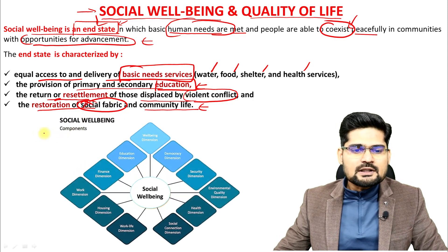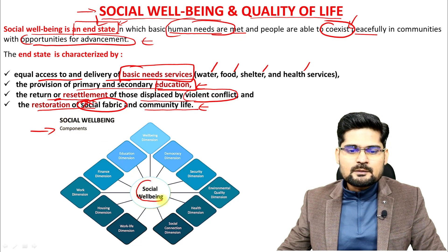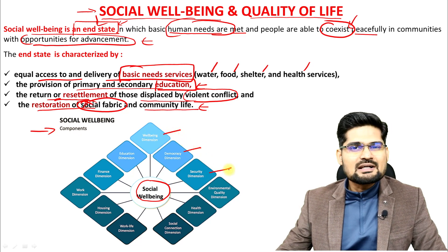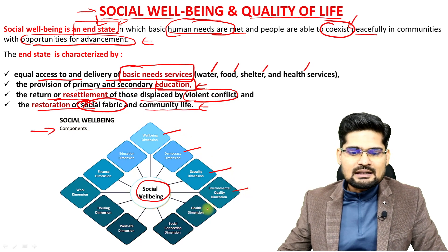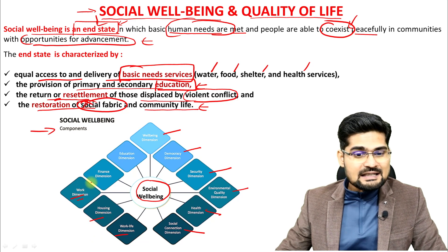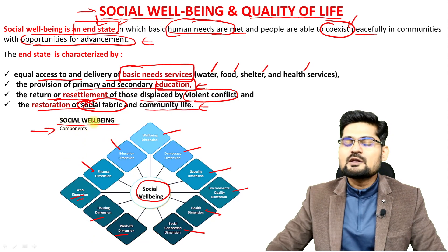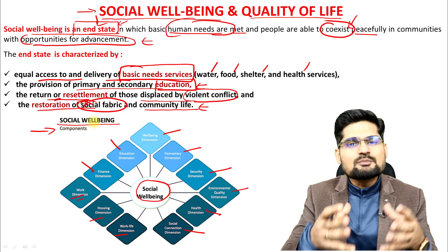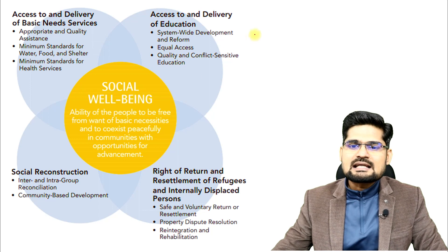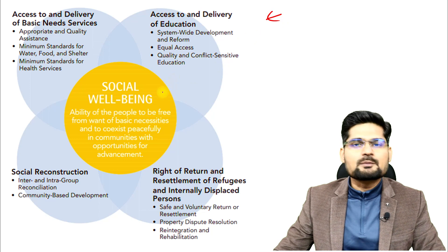Social well-being has several dimensions. If you observe the diagram: the well-being dimension, democracy dimension, security dimension, environmental quality dimension, health dimension, social connection, work dimension, housing, workplace, finance dimension, and education — all these aspects comprise the entire social well-being. There is also a systems approach flow diagram showing several overlapping subsystems that together create social well-being status.